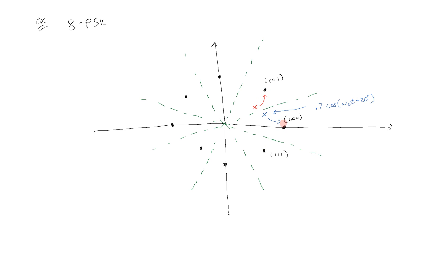Whereas in analog communications such an error would just corrupt our signal, here we get a real error because we no longer get anything near what we tried to transmit. Imagine if it had been interpreted as 111 — that would be a very big mistake. So that's the idea with constellation diagrams: you can examine these schemes, look at the decision boundaries, and tell how much noise your system can suffer before an error occurs. Here you can see that a phase shift of greater than 22.5 degrees is going to shift our transmission over the decision boundary and therefore create an error.